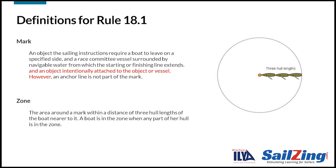The zone is the area around a mark within a distance of three hull lengths of the boat nearer to it. A boat's in the zone when any part of her hull is in the zone.